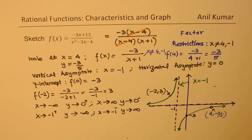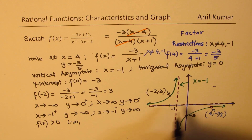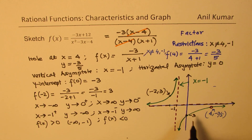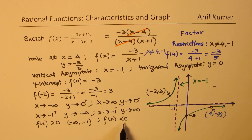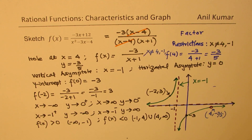Once you have defined all these behaviors, we can describe where the function is positive or negative. We can say f(x) is greater than 0 on the interval from negative infinity to minus 1. And f(x) is less than 0 on the interval from minus 1 to 4, union 4 to infinity. Note that x equals 4 is not in the domain, so you must split the interval there. That's important.